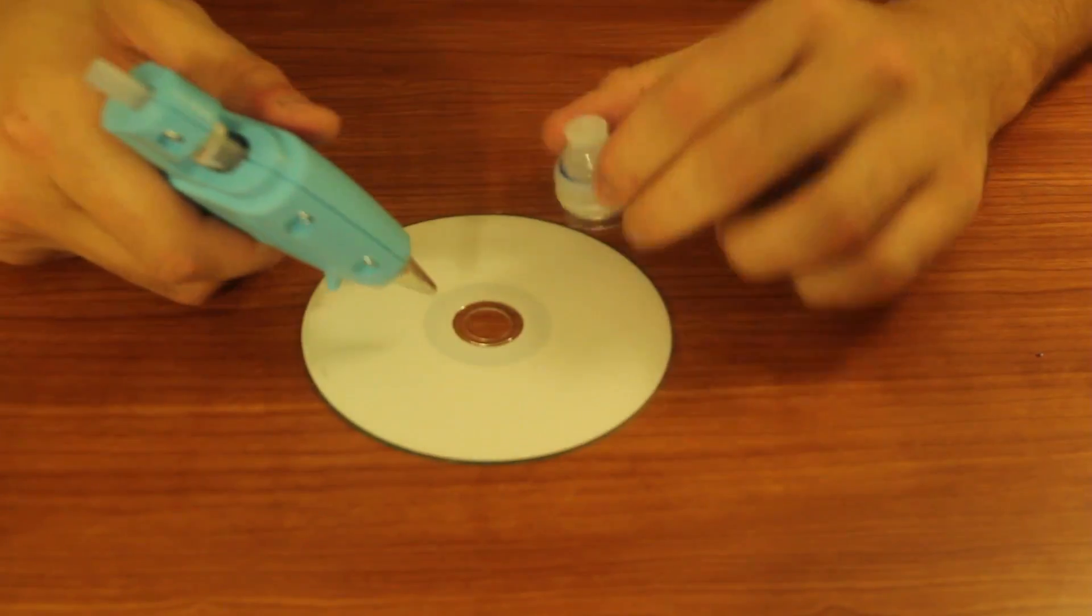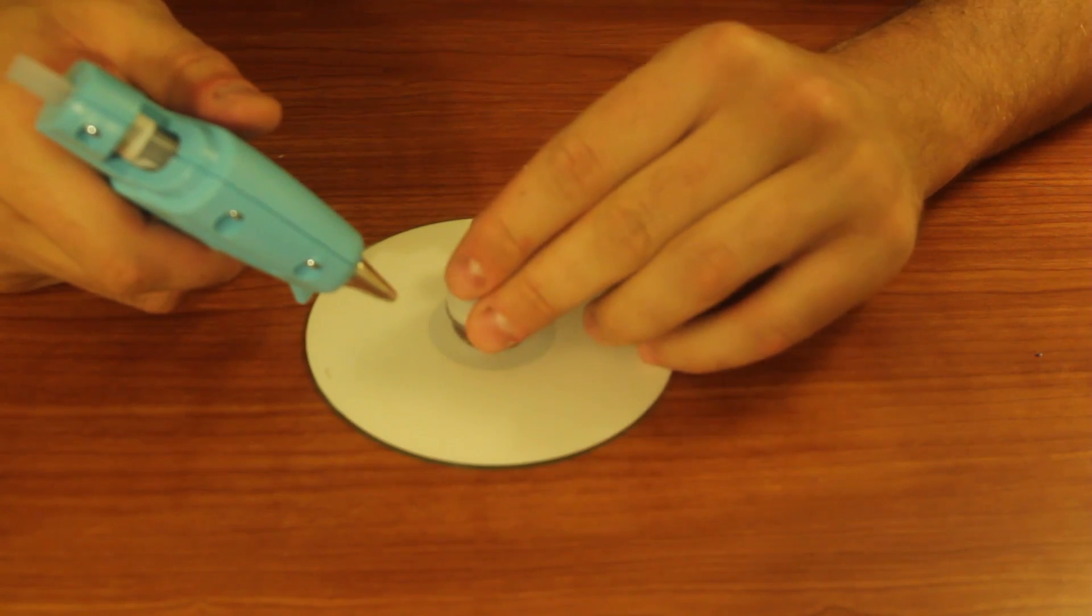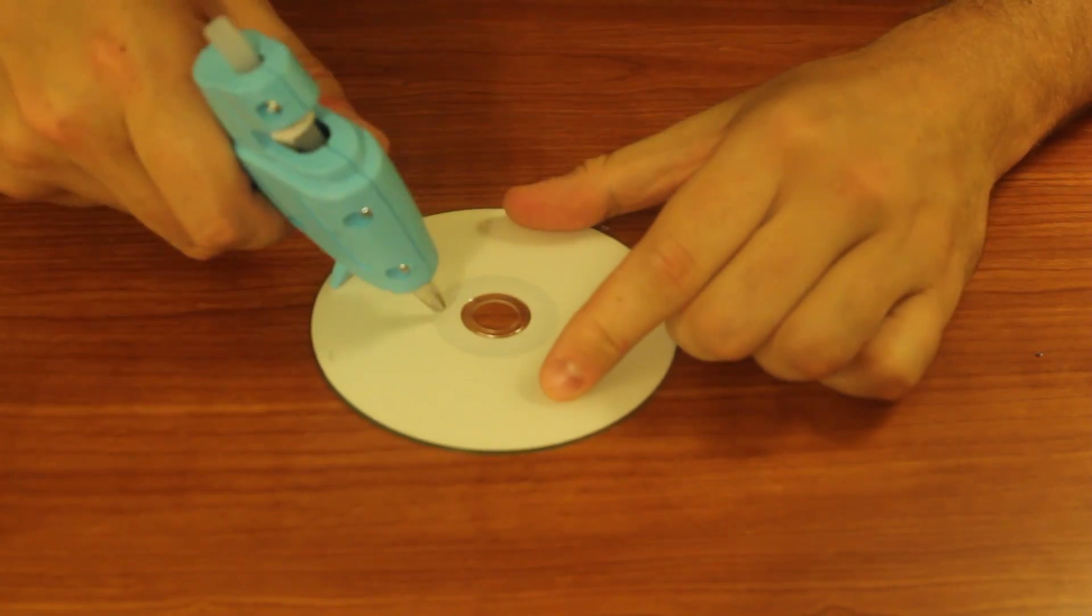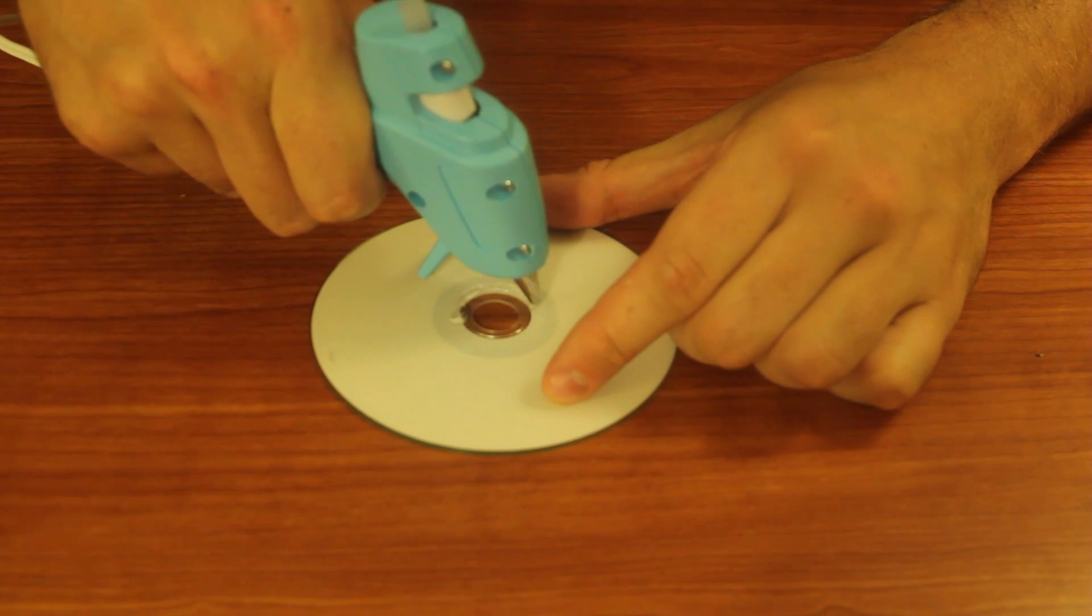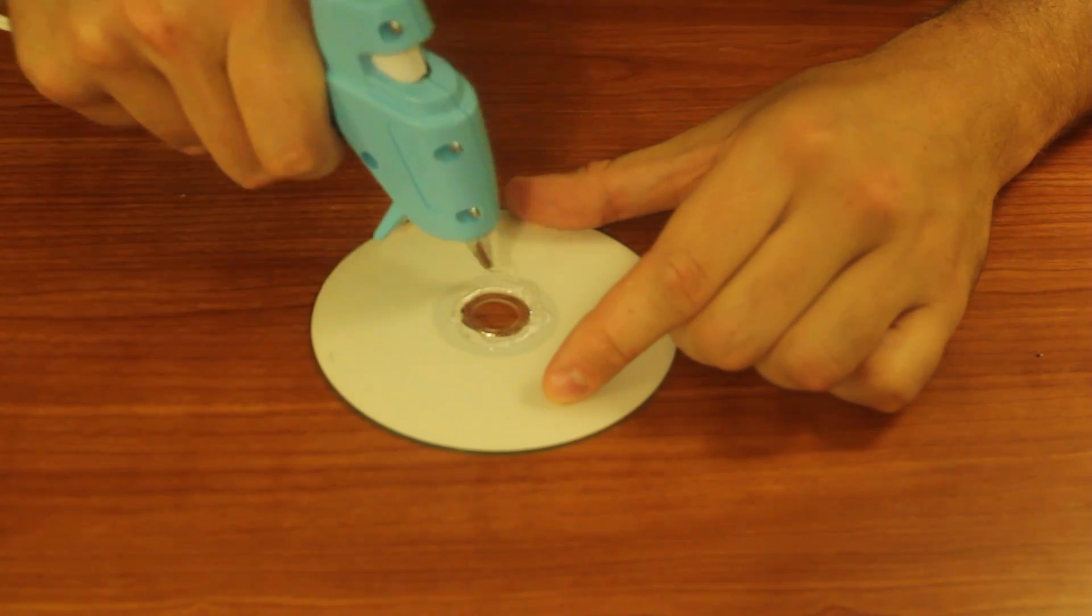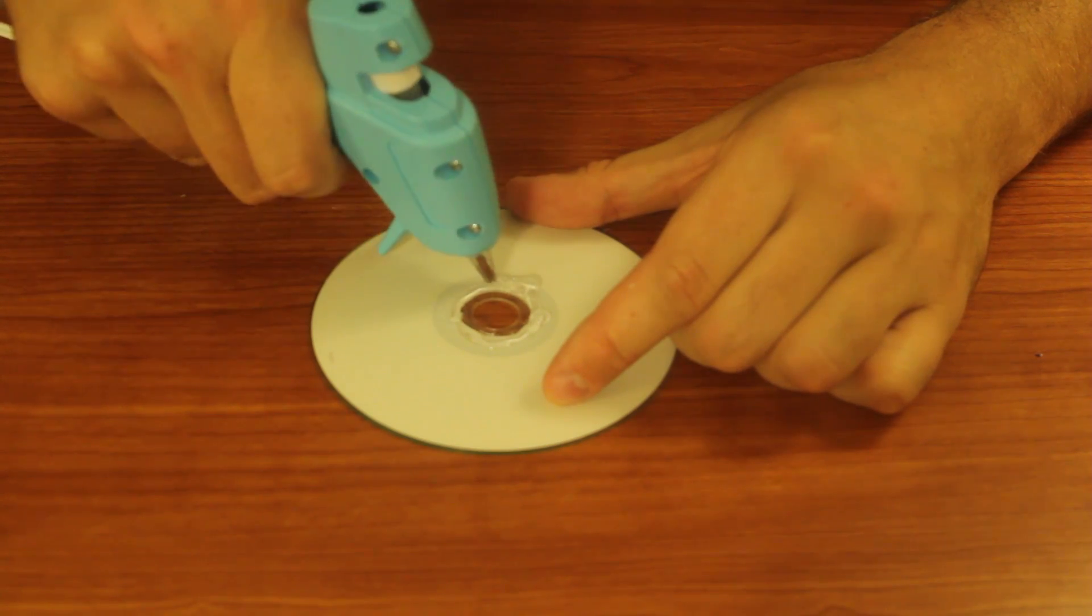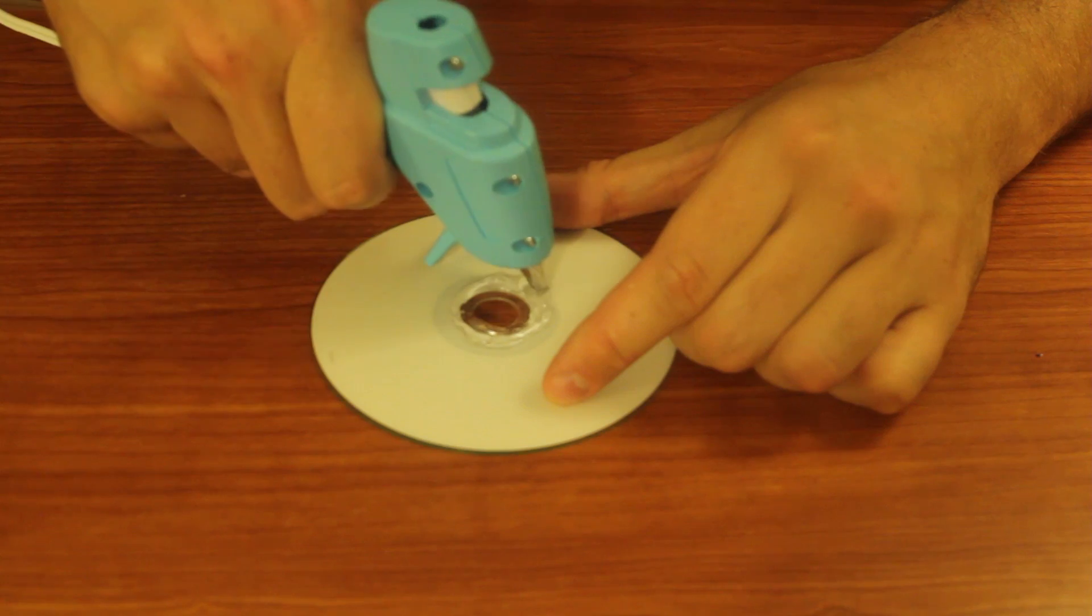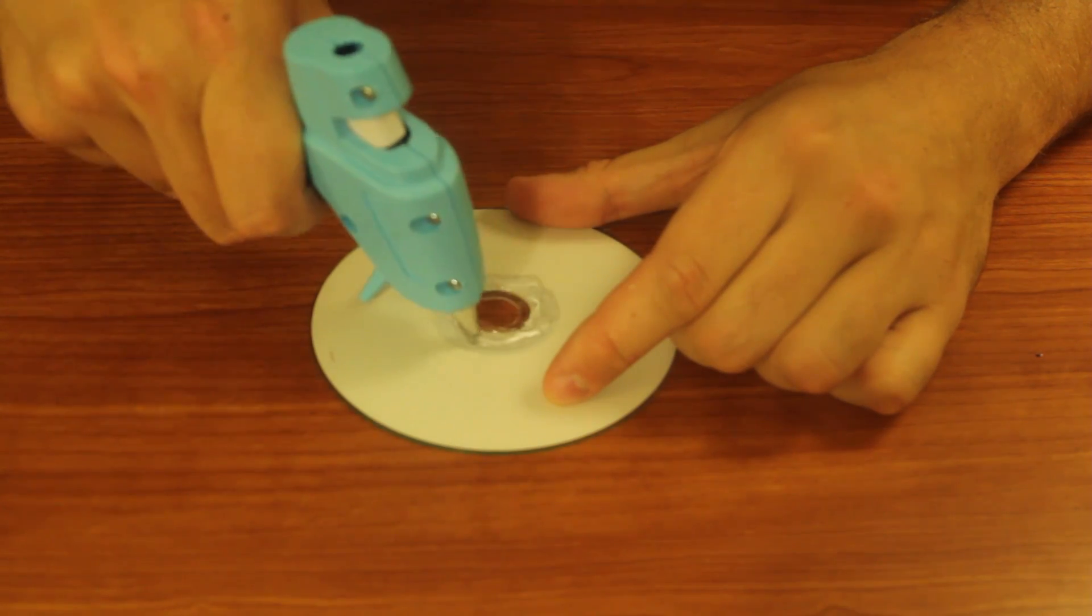Then we're gonna grab our glue gun and measure it, glue around somewhere. We're gonna put glue all over here, a whole bunch of glue. We want a lot so it will stick. And we don't want any air to come out from the CD and the bottle cap.